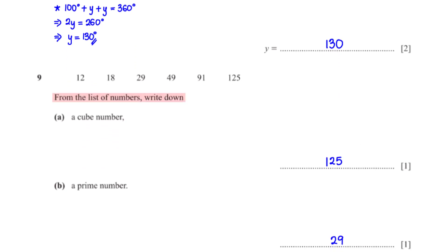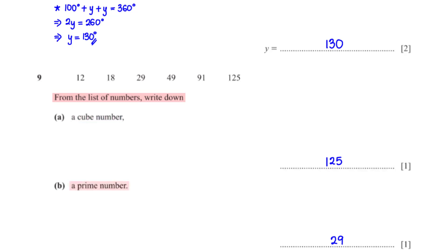From the list of numbers, write down a cube number. The cube number in this list is 125, since 5 cubed gives us 125. Write down a prime number. The prime number in the list is 29, because it only has two factors: one and itself.